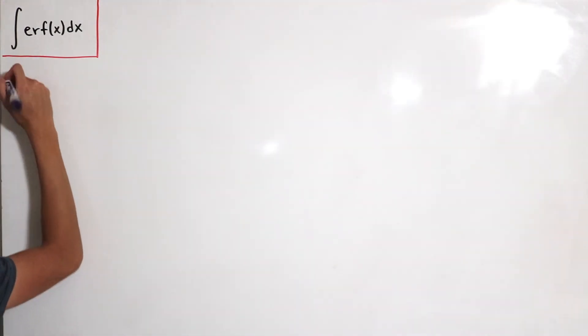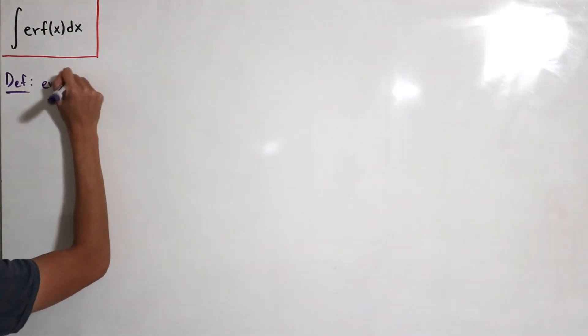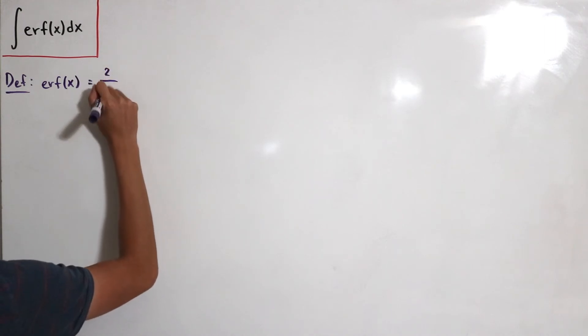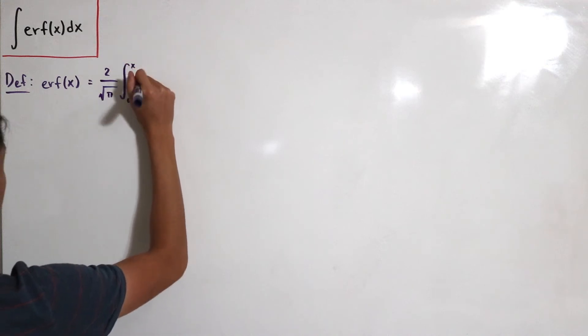The definition of the error function is that erf(x) is equal to 2 divided by the square root of π and then multiply with the integral from zero to x of e to the power negative t squared dt.